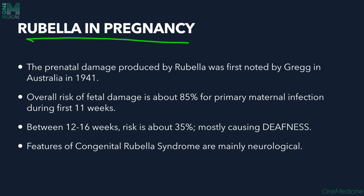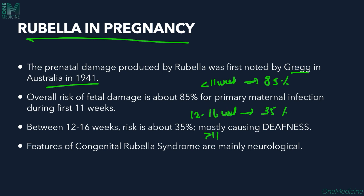Perinatal damage caused by rubella was first noted by Gregg in Australia in 1940. If the mother is less than 11 weeks pregnant, there is an 85% chance of the infant being affected. Between 12 to 16 weeks of gestation, the risk reduces to 35%. After 16 weeks, the infant may still be affected but severity is less than in the first trimester.